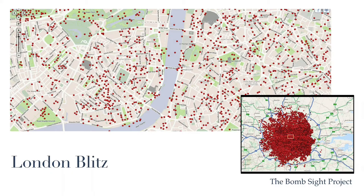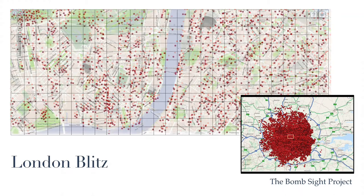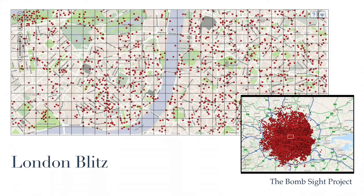Here's something one can do. For instance, one could simply superimpose a grid block by block across a segment of London, look at the number of bombs that have fallen on individual blocks, and try to characterize these statistically.